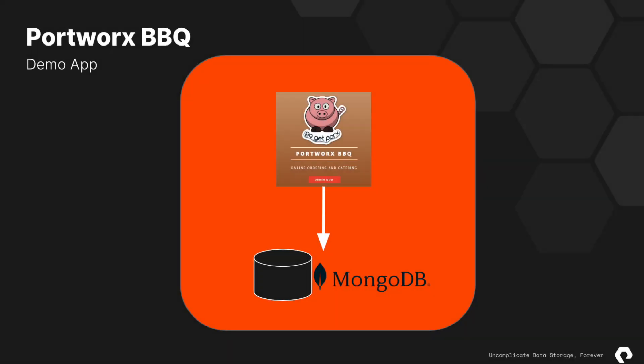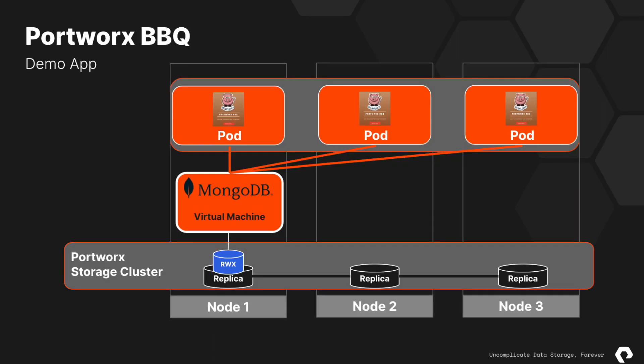For our demo, we'll be using our Portworx BBQ application which requires a MongoDB database to store food orders from our fictional BBQ company. The MongoDB database lives on a virtual machine that's running on Red Hat OpenShift with the virtualization operator installed to manage virtual machines. The MongoDB database is running on a single node and is using a read-write many storage volume provided by Portworx Enterprise.